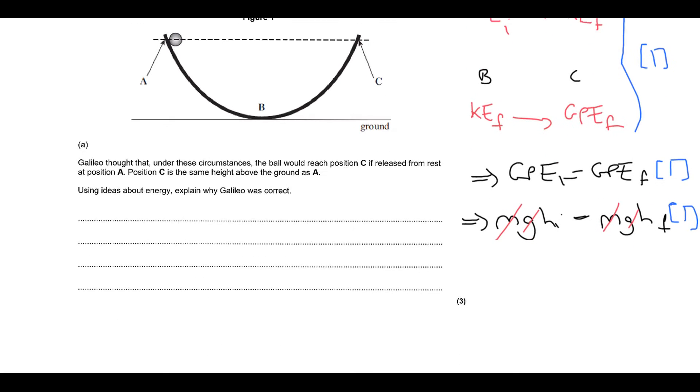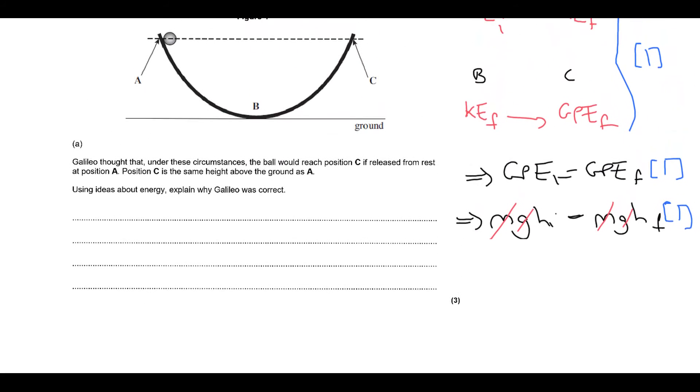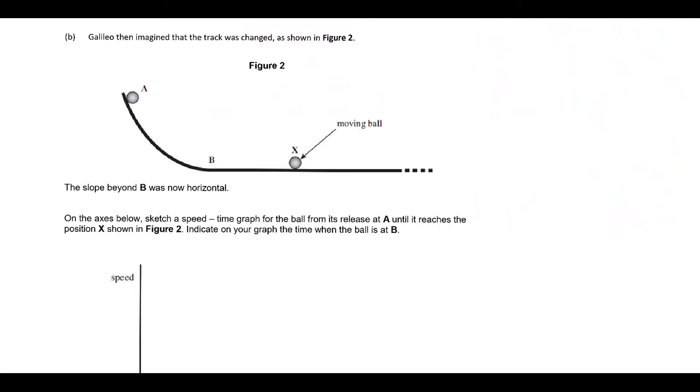Alrighty so let's move on to the next. So then Galileo imagined his track changes to this one so we've taken away the second half of the curve and the slope is now horizontal. So we want to sketch a speed versus time graph for the ball from its release at A until it reaches position X as shown and indicate on your graph the time when the ball is at B.